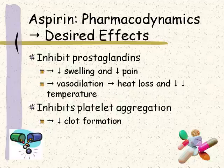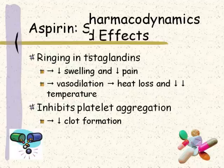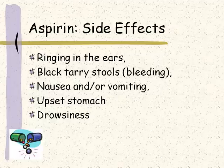This inhibition of prostaglandins is also going to lead to vasodilation. Remember, somebody has a fever — they look red, that's superficial vasodilation — and it leads to heat loss, therefore bringing down the person's temperature. Aspirin also inhibits platelet aggregation, which means less clot formation. Common side effects include ringing in the ears, black tarry stools — meaning bleeding in the GI tract — nausea and/or vomiting, upset stomach, and drowsiness.